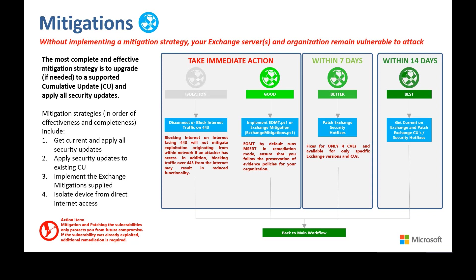Microsoft has provided security updates for the four vulnerabilities which can be applied to legacy cumulative updates. These do not provide any mitigation for additional vulnerabilities which may be present in those products. For supported cumulative updates, the most complete and effective mitigation is to apply all security updates and patches. Microsoft recommends implementing a mitigation strategy immediately and then moving to a fully up-to-date and patched cumulative update for maximum protection as quickly as possible.